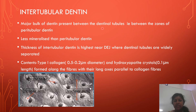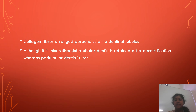Next is intertubular dentine. Intertubular dentine forms the main bulk of dentine and is present between the dentinal tubules. It is less mineralized than peritubular dentine. The thickness of intertubular dentine is highest near the dentino-enamel junction where dentinal tubules are widely separated. It contains type 1 collagen and hydroxyapatite crystals, with collagen fibers arranged perpendicular to the dentinal tubules. Although it is mineralized, intertubular dentine is retained after decalcification, whereas peritubular dentine is lost.